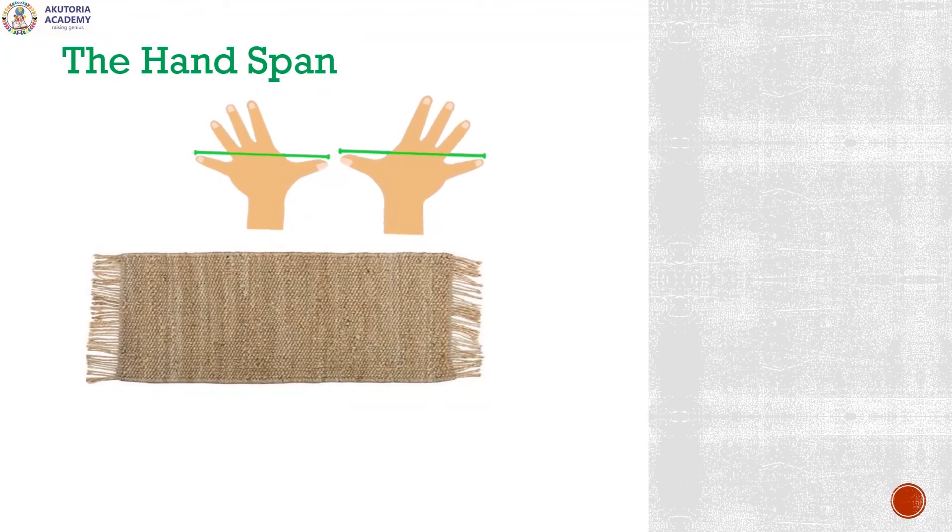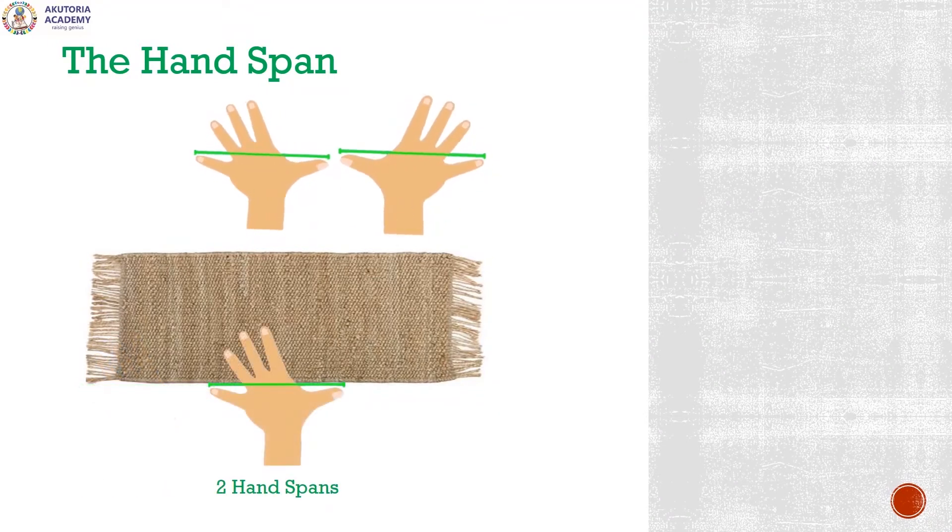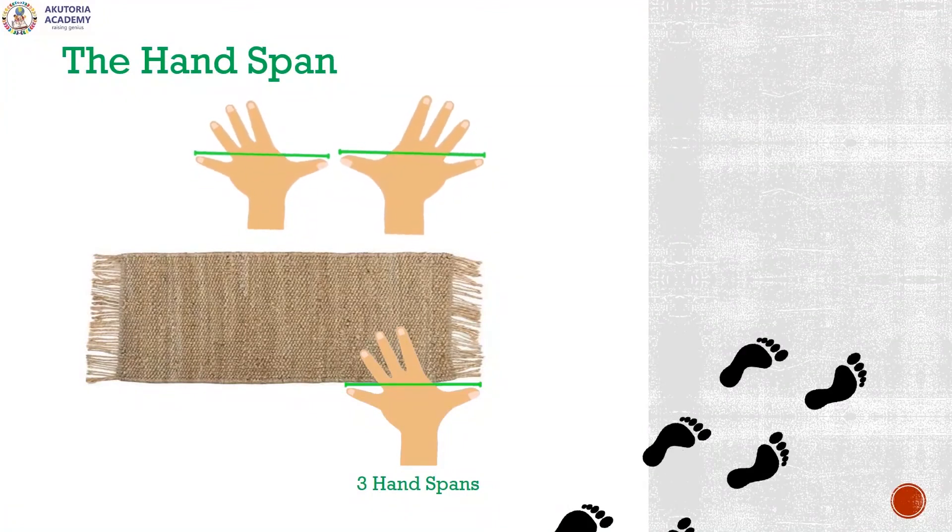So let's measure the length of this mat. How many hand spans do you think this mat is? One hand span, two hand span, three hand spans. We found out that this mat in length is three hand spans.